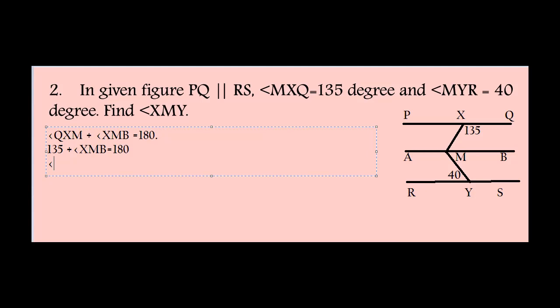So, angle XMB equals 180 minus 135, which is 45 degrees.